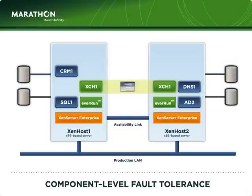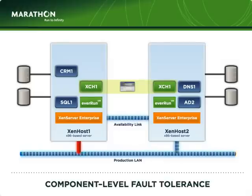Network failures are handled in the same fashion. While each ZenServer host has its own network interface, EverRun utilizes one at a time. Should the active network interface suffer a failure, all network IO is immediately and transparently redirected to the network interface on the other host. This is all done automatically and with zero impact to the application or to the clients. Repair the problem, and EverRun re-enables the device for service.